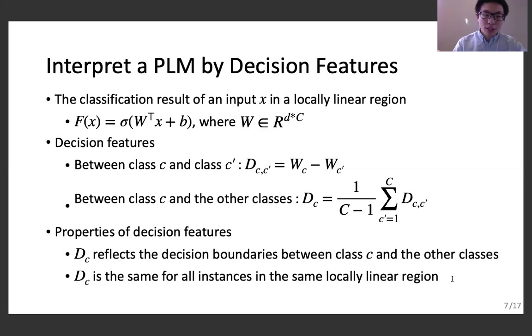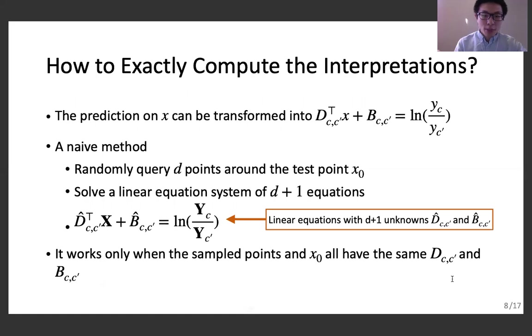Decision features have nice properties, but how can we exactly compute them? To compute dc, we start by computing d_cc' for each c'. It is obvious that the predictions on an input can be transformed into an equation that formed by d_cc' and b_cc'. That formulation gives us a hint that maybe we can get a closed-form solution of d_cc' and b_cc' by using the prediction results.